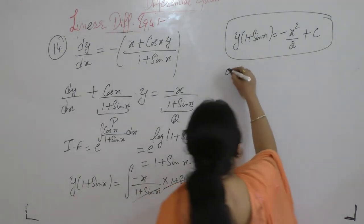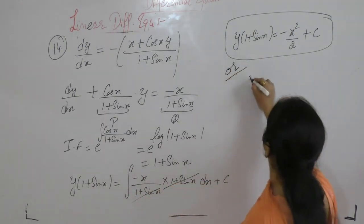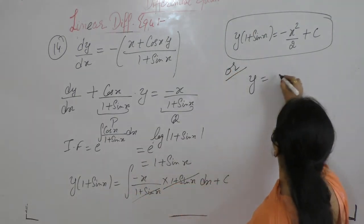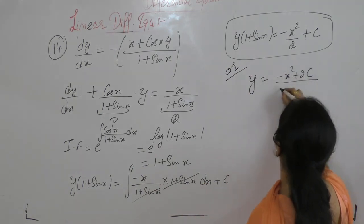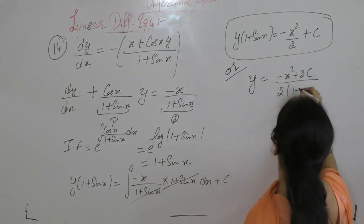Or we can write y = (−x² + 2c) / (2 · (1 + sin(x))).